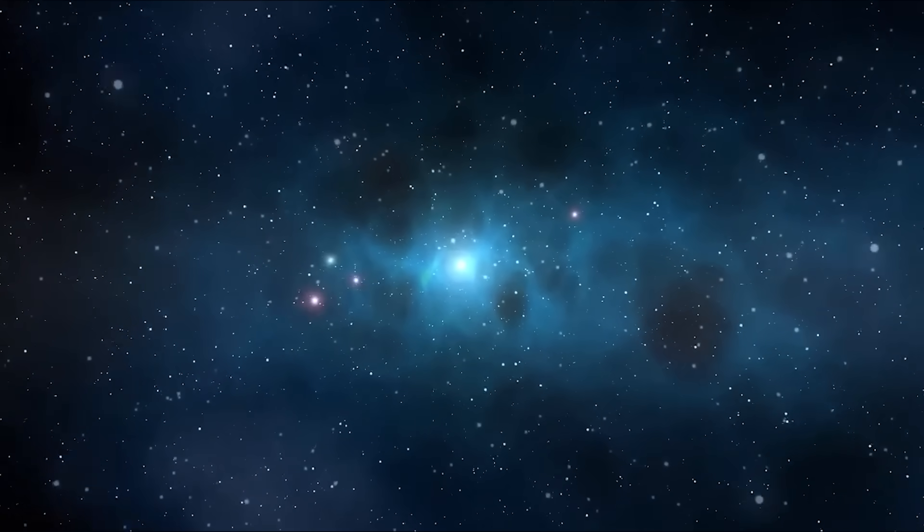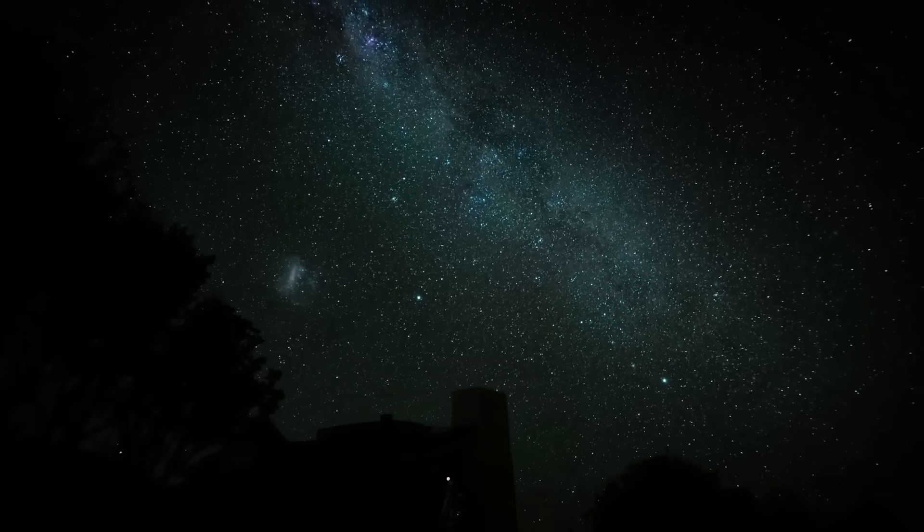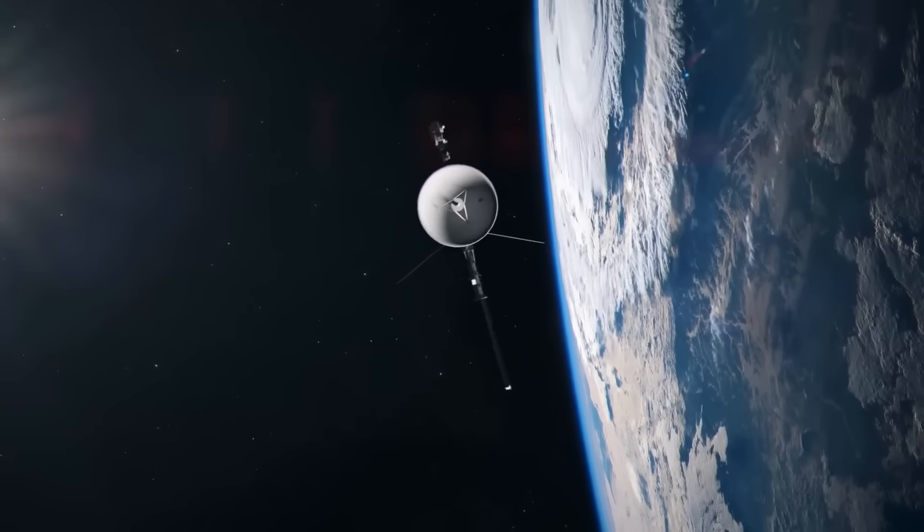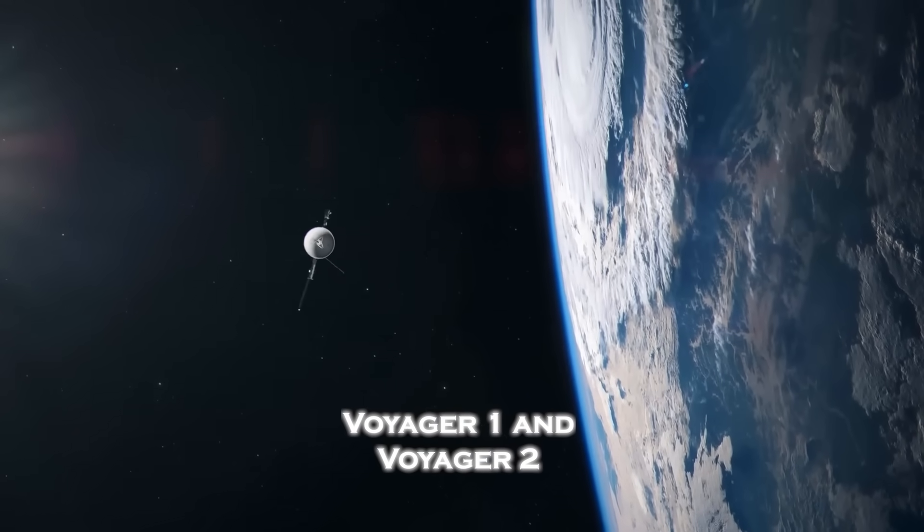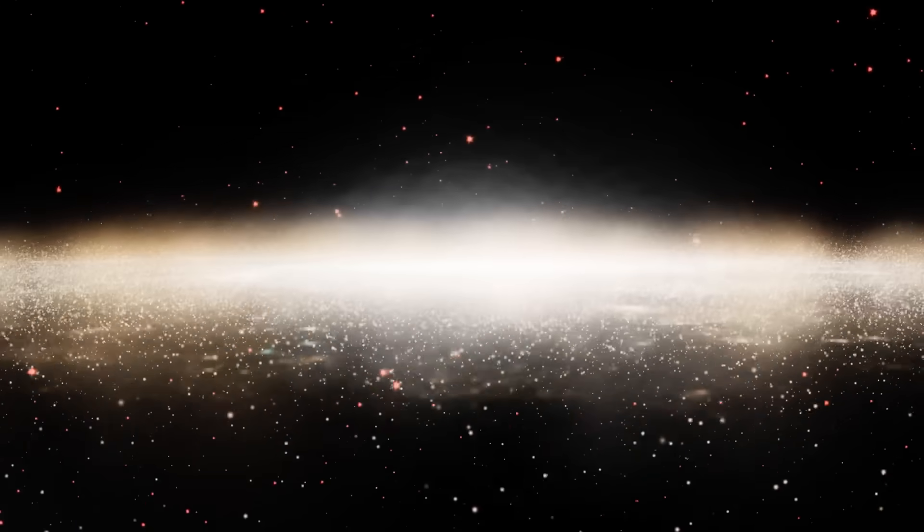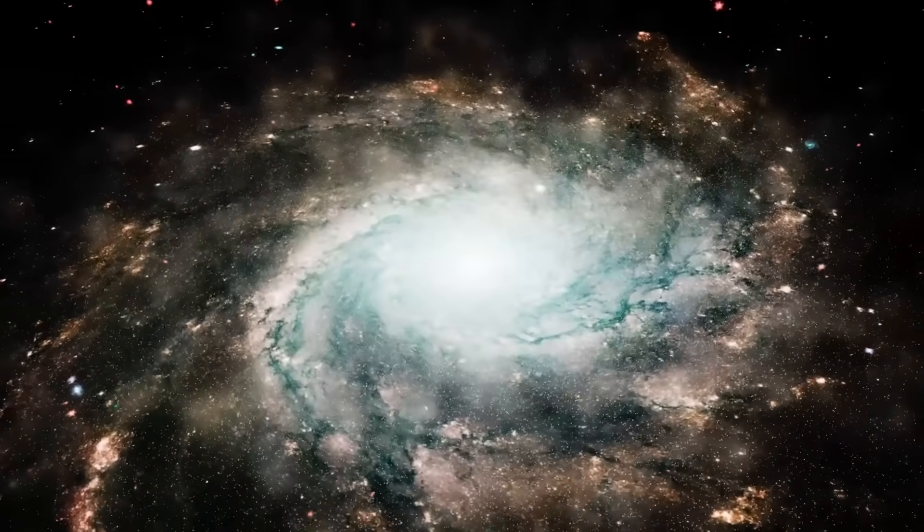In the endless black between the stars, where the sun's warmth no longer reaches and the silence has lasted for billions of years, two of humanity's oldest machines drift alone. For decades, Voyager 1 and Voyager 2 have been our quiet emissaries to the unknown, their ancient instruments still whispering home across distances so vast that a single message takes nearly a day to arrive.